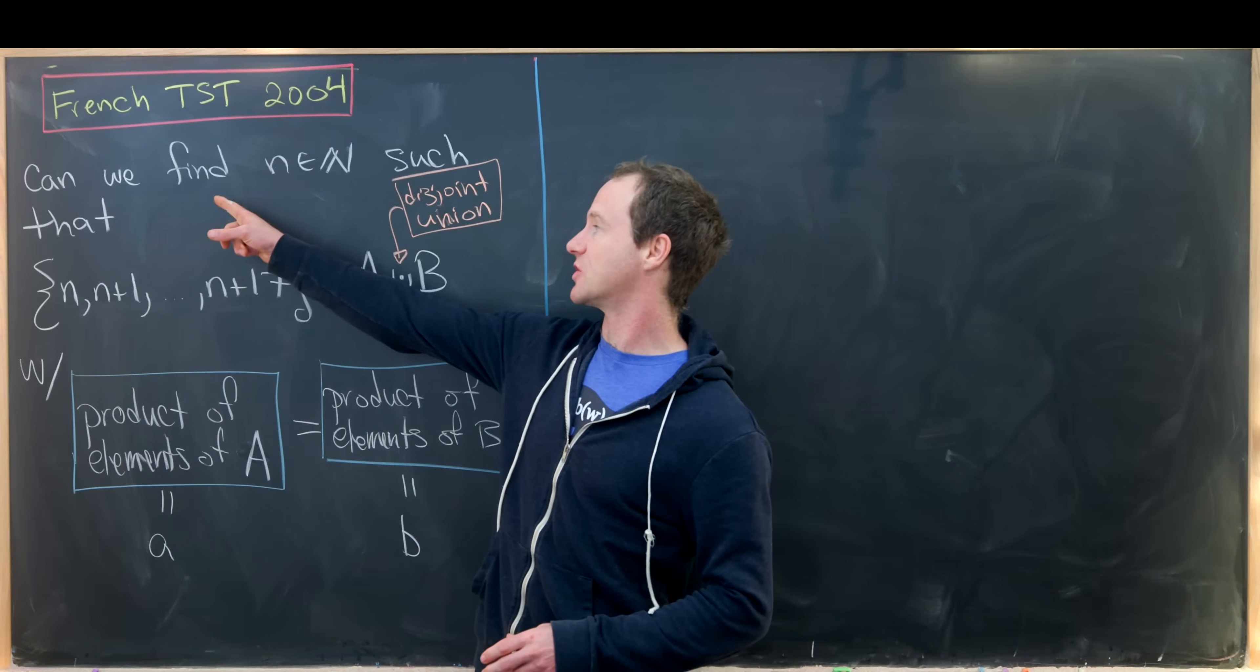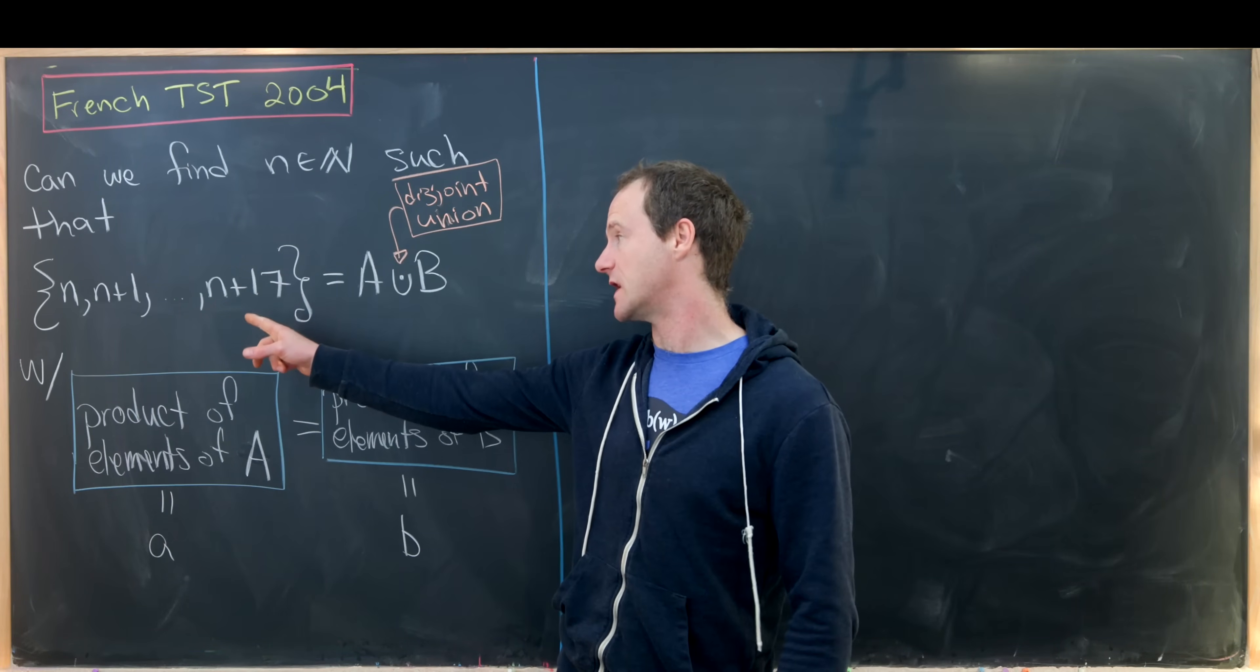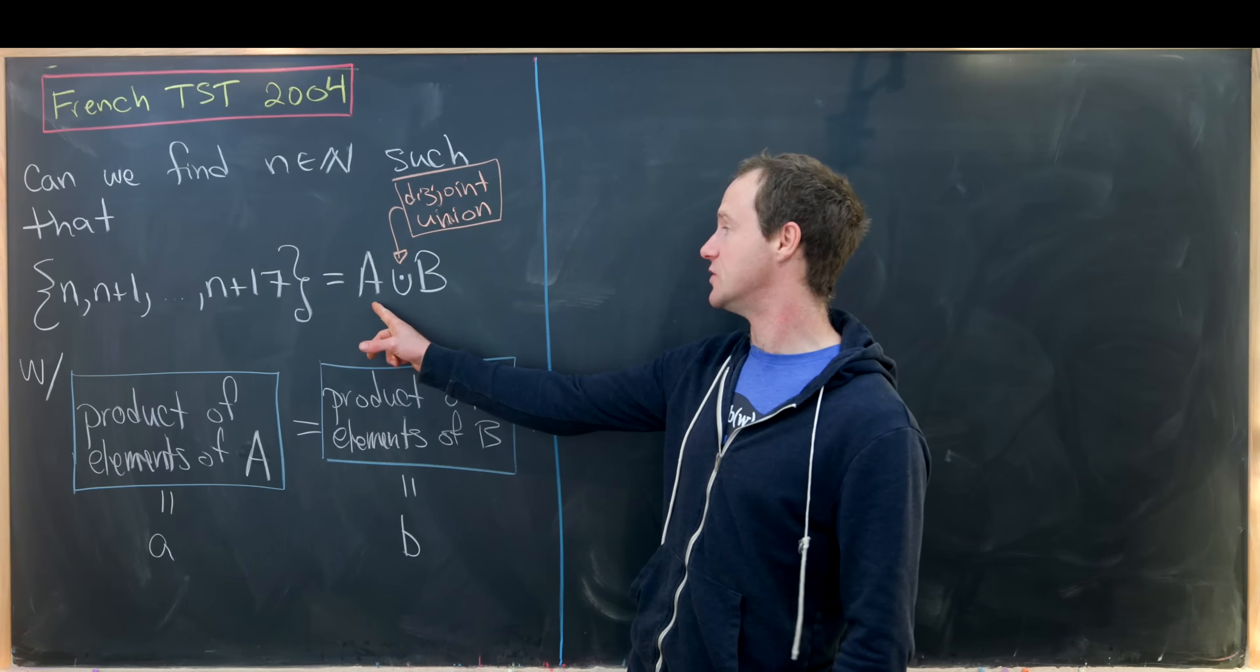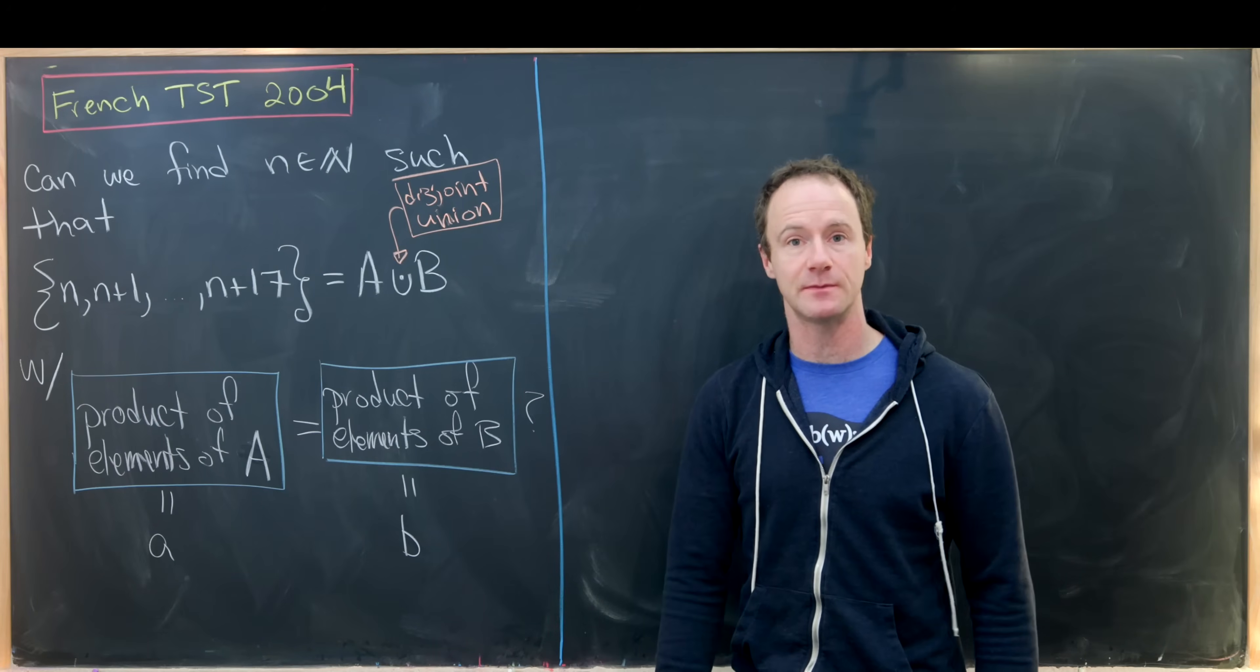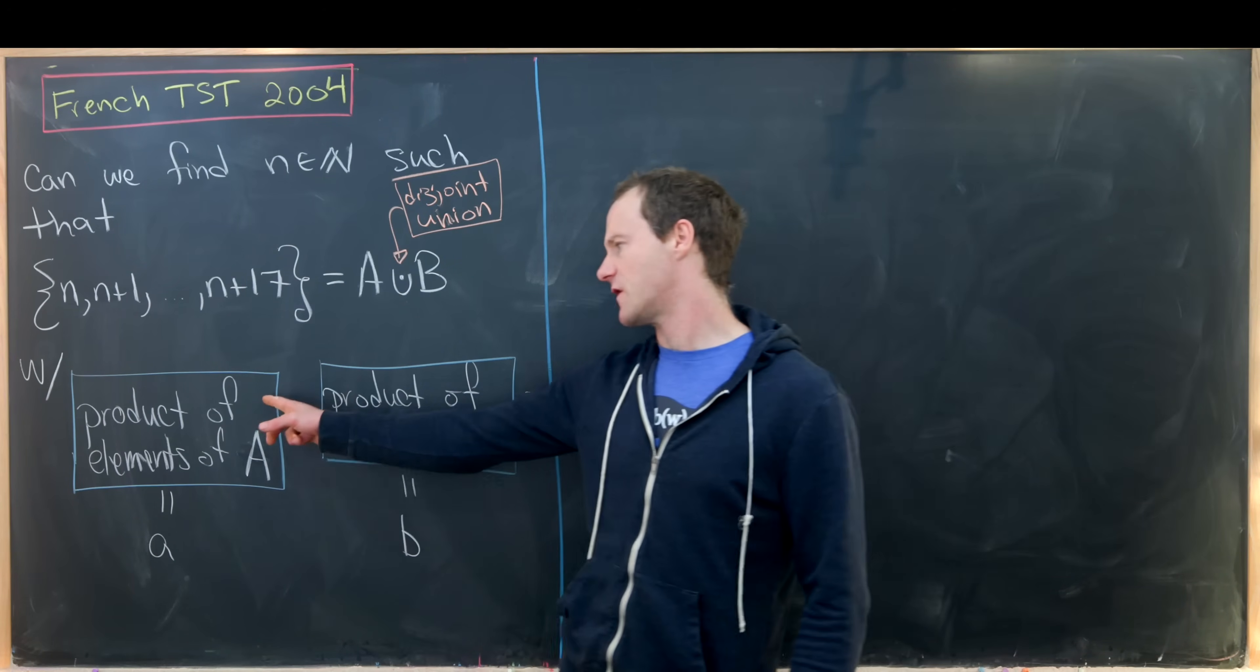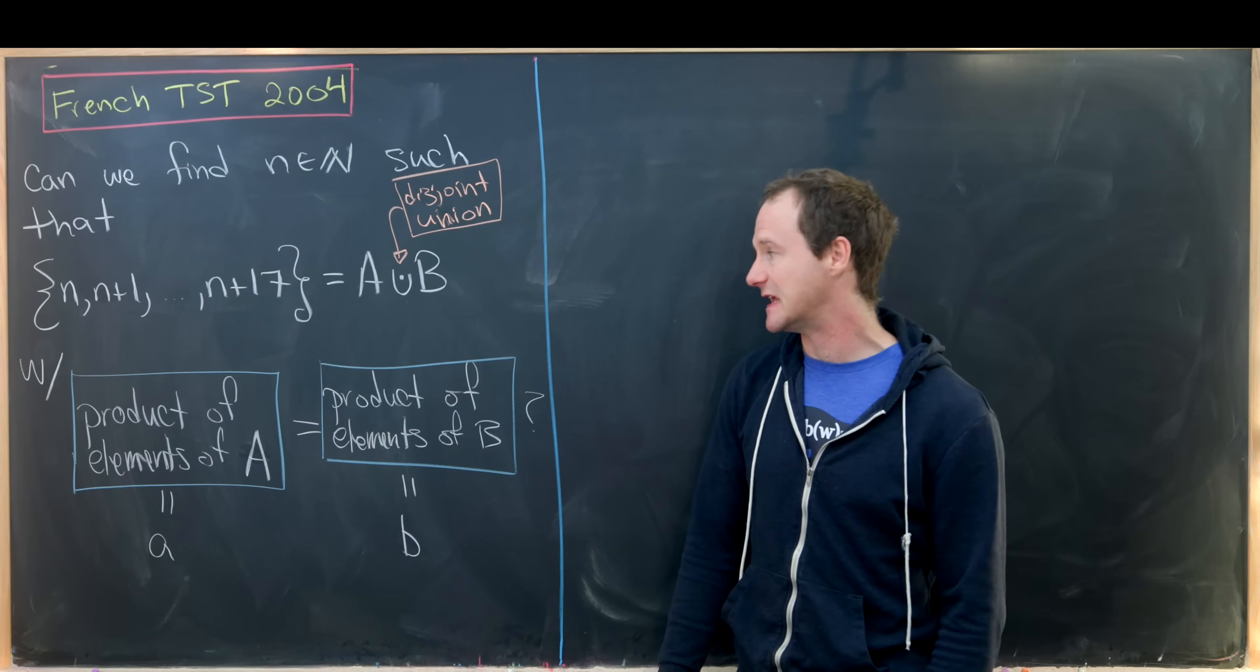Our goal is to determine if we can find a natural number n such that the set {n, n+1, n+2, all the way up to n+17} can be decomposed into a disjoint union A and B, in a way so that the product of the elements of A is equal to the product of the elements of B. I'll call this product of elements a little a and this product of elements b, little b, just for ease of notation.